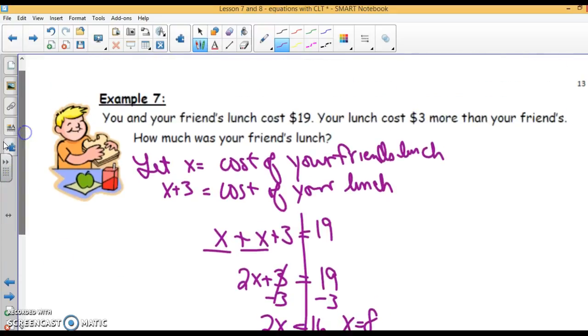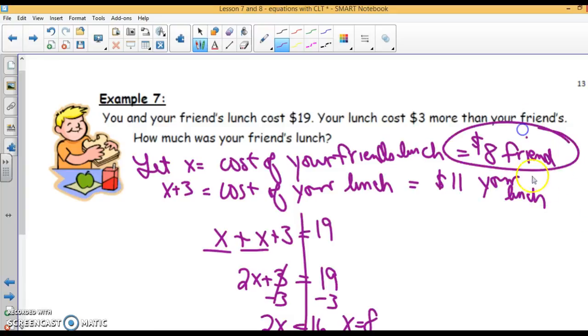Let's go back and answer the question. How much was your friend's lunch? Well, the friend's lunch was $8. If the problem had asked how much your lunch was, 8 plus 3, your lunch is $11. All it was asking was how much your friend's lunch was, so it was $8. But in another problem, they might ask you also to find the cost of your lunch.